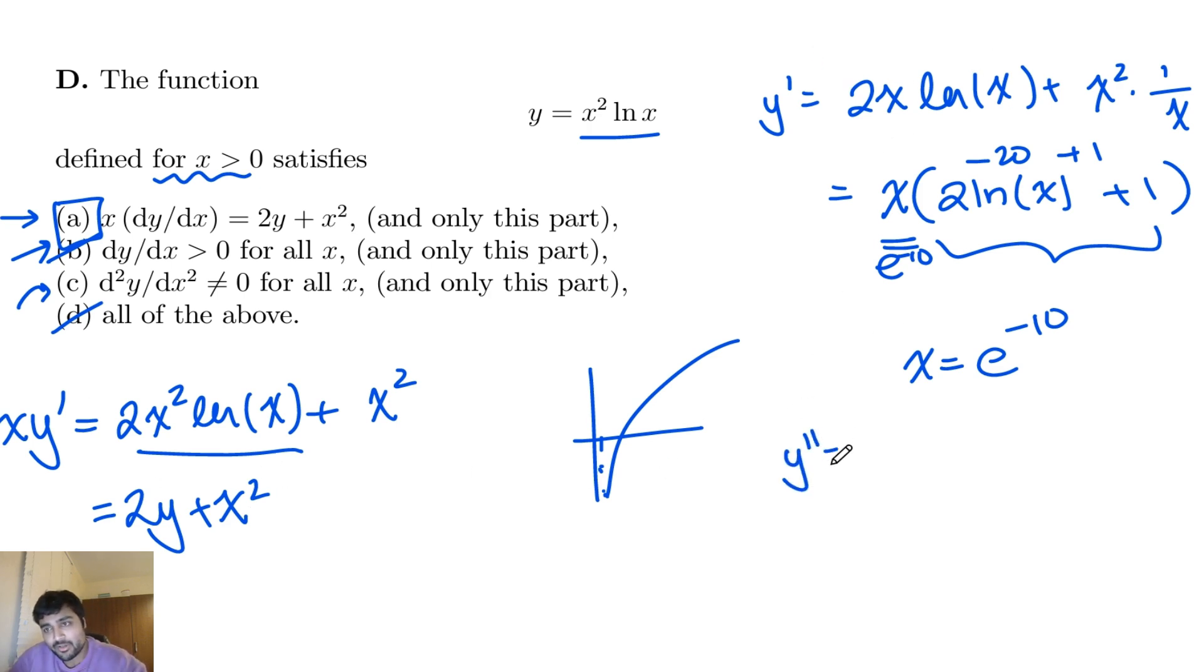And y double prime, if I use the product rule here, is 2 ln x plus 2, and then plus the derivative of x is just 1, like so.